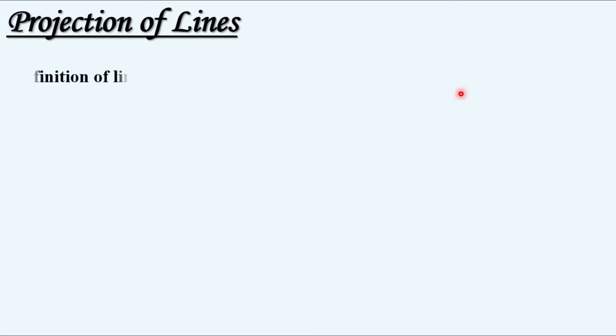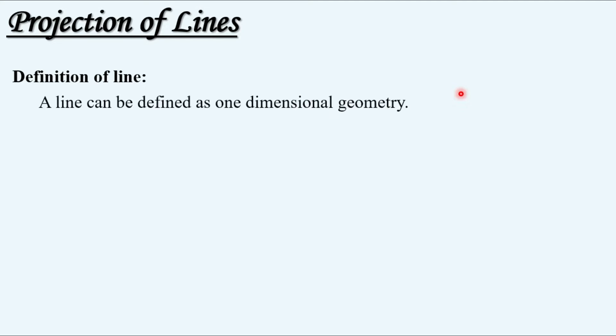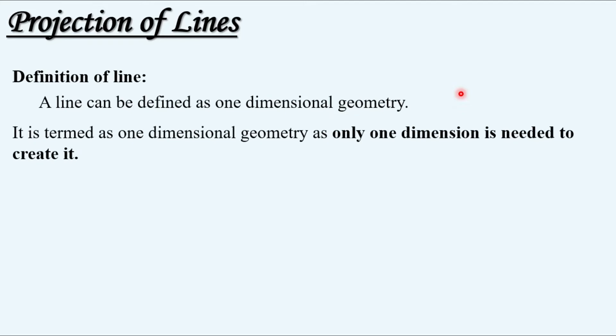In order to understand the projection of lines, let us start with the definition of a line. A line can be defined as one-dimensional geometry, as only one dimension is needed to create it.